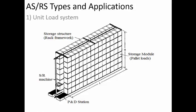So what are the different types and their applications? The first one is the unit load system. In this system, each storage space stores only one component — one part is stored in one area.